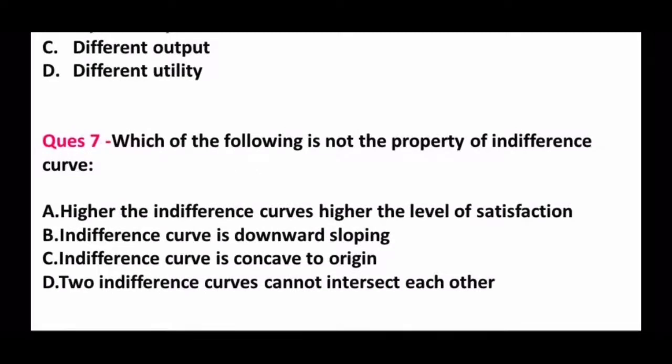Question 7: Which of the following is not the property of indifference curve? First, higher the IC, higher the level of satisfaction - true. Indifference curve is downward sloping - true. Indifference curve is concave to origin - no. Two ICs cannot intersect each other - true. So the option here is C.